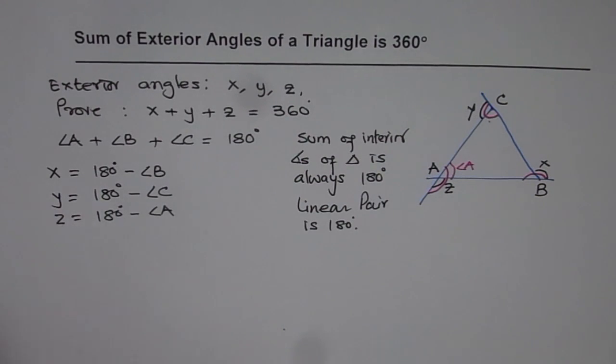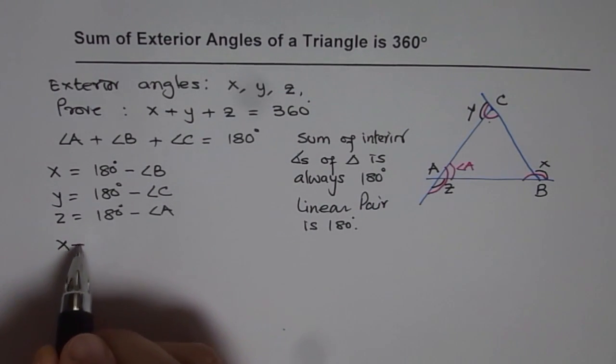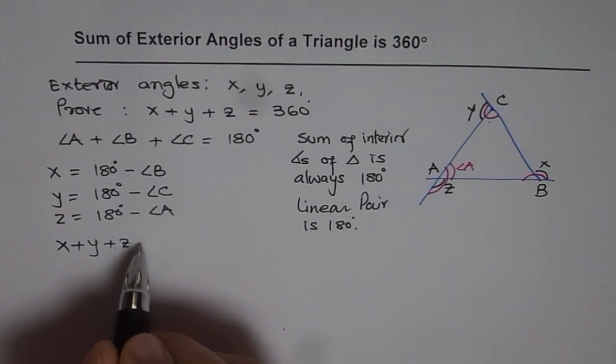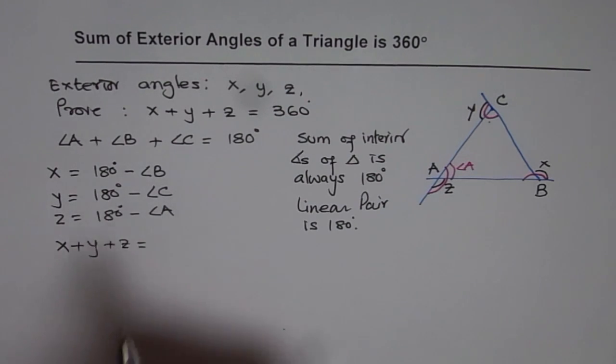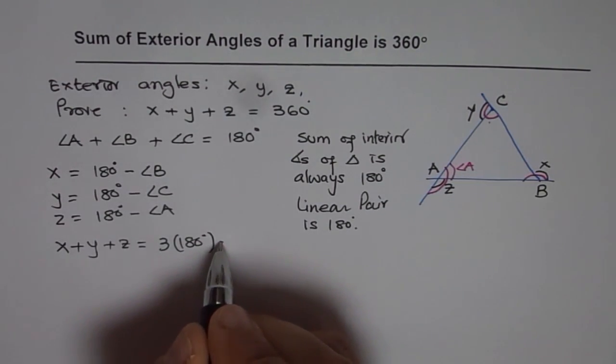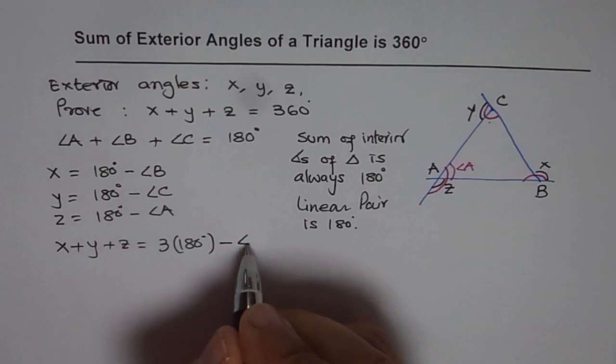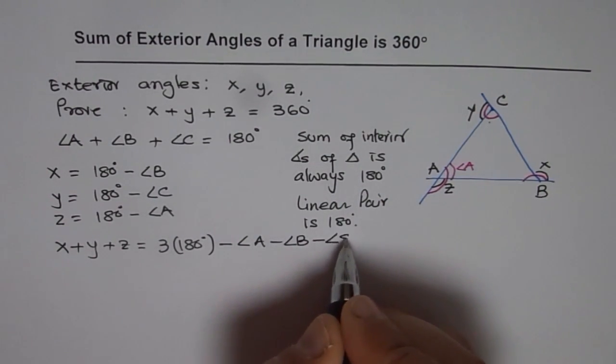Now, what is the sum of x, y and z? So if I add them up, what do I get? x plus y plus z is equal to how much? 180, 180, 180. There are three 180s, right?